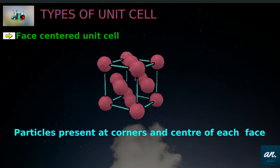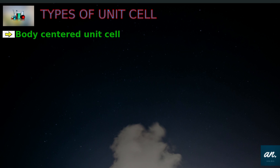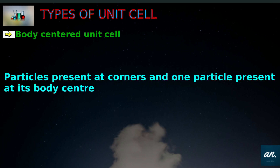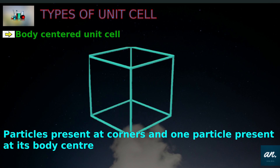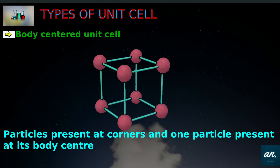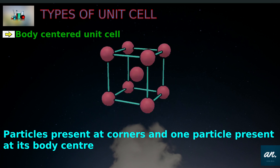Now we discuss the body-centered unit cell. Here is the definition: particles are present at corners and one particle is present at its body center. In the picture, particles are in the corners and one particle is in the center of the cube.